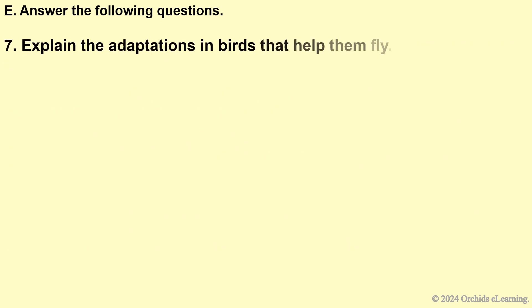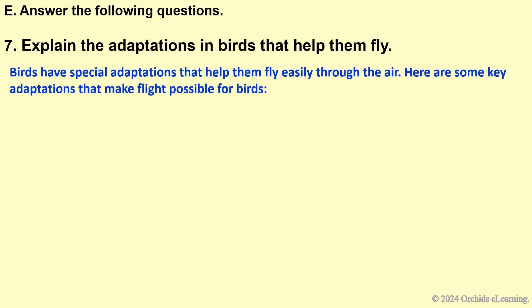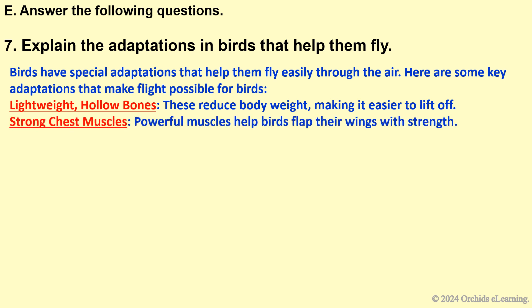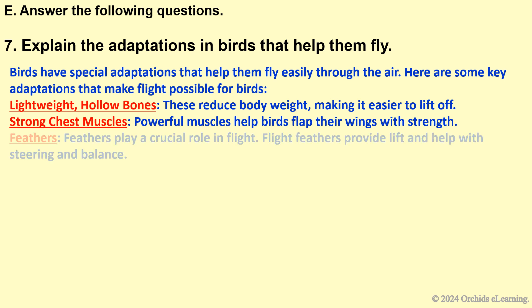Explain the adaptations in birds that help them fly. Birds have special adaptations that help them fly easily through the air. Hollow bones reduce body weight, making it easier to lift off. Strong chest muscles help birds flap their wings with strength. Feathers play a crucial role in flight — flight feathers provide lift and help with steering and balance.